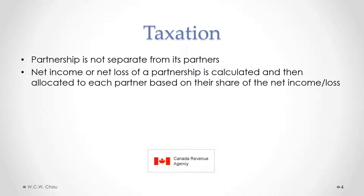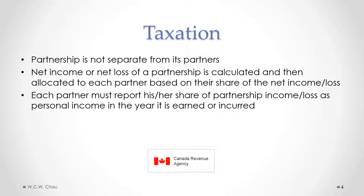We then allocate that net income or net loss to each partner based on their share. The percent amount of that share will be determined either under the default rules of the Partnerships Act or under some other split agreed to in a partnership agreement. Each partner must report their share of the partnership income or loss as personal income in the year it is earned or incurred.